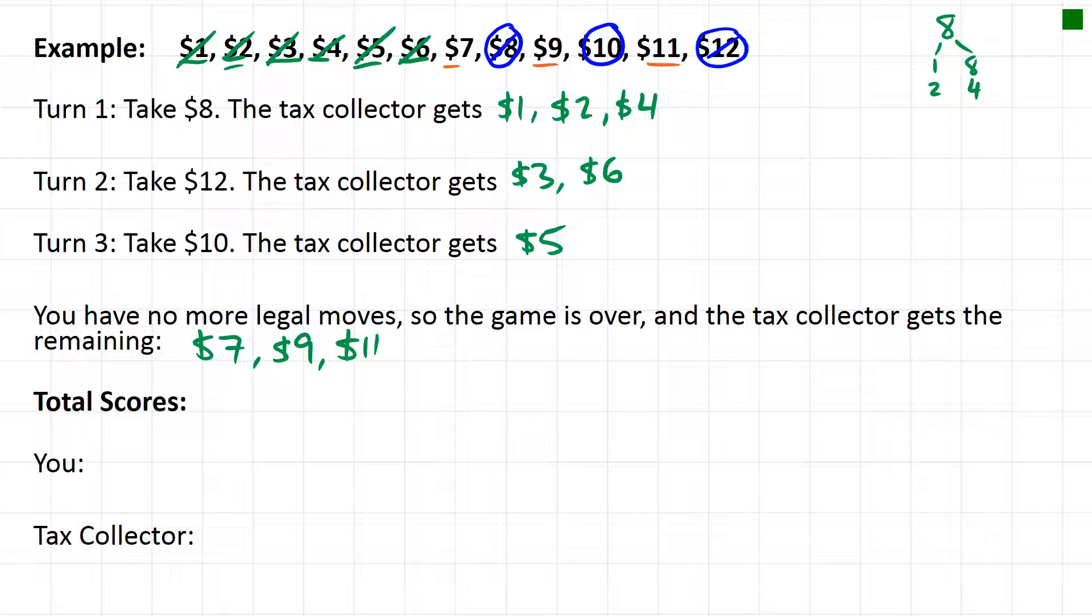So I got eight, twelve, and ten. That totals to thirty dollars. The tax collector gets one, two, four, three, six, five, seven, nine, and eleven. That totals to forty-eight dollars. So the tax collector has won this game and I have lost.